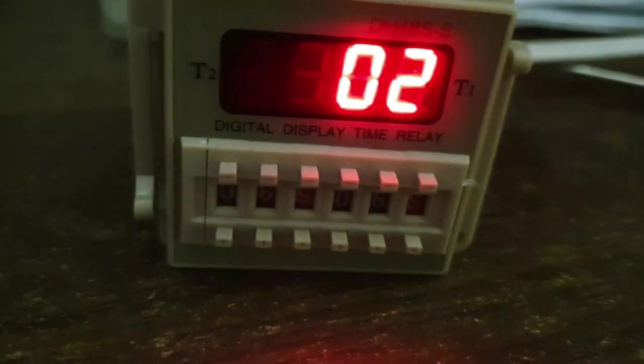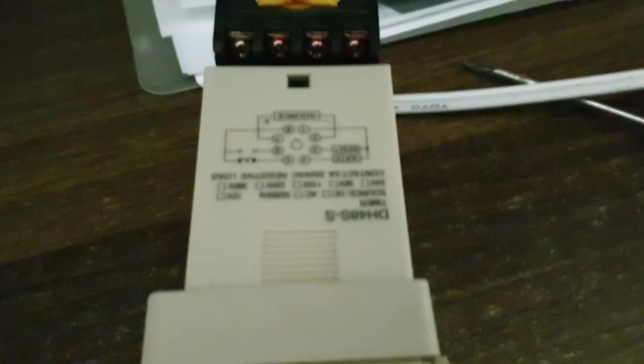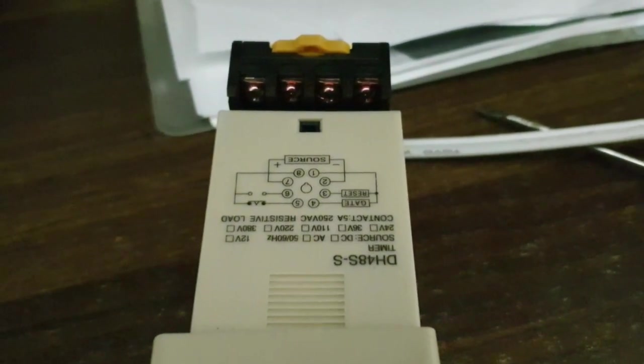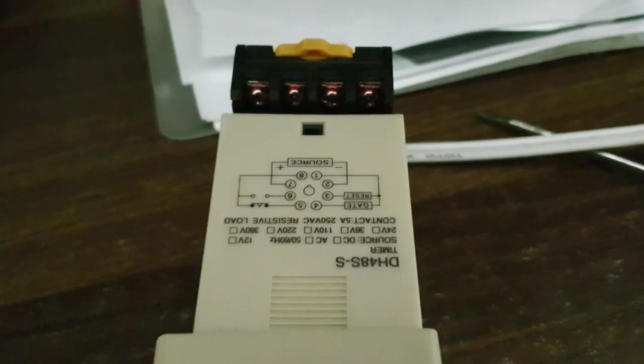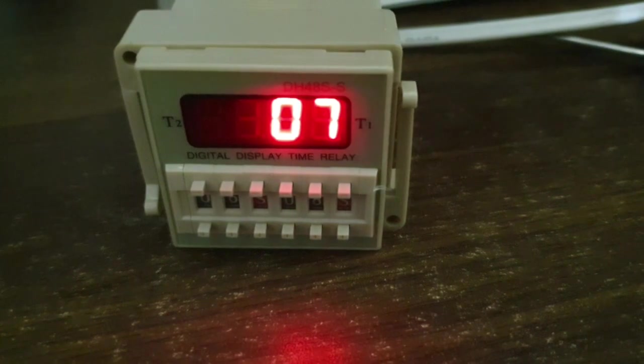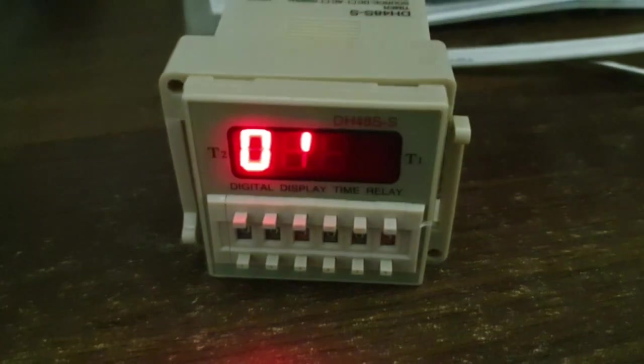Looking back at the diagram, pin number five and eight are normally connected. When this time T1 is on, the relay is normally connected between pins five and eight.